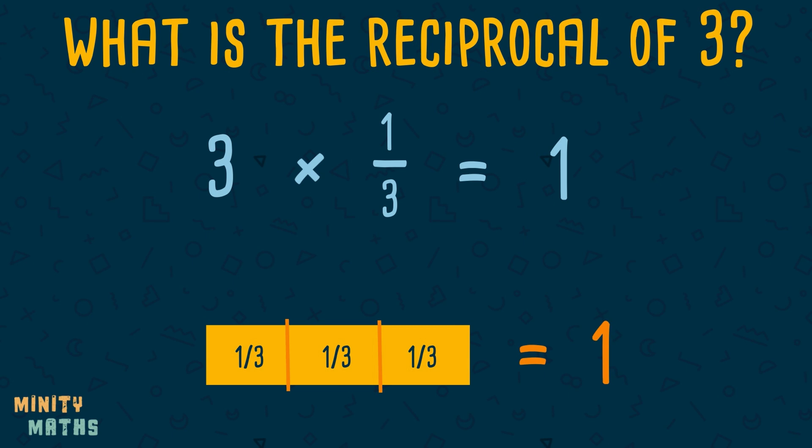We can see that 3 lots of thirds add up to make 1. So, 3 multiplied by 1 third is equal to 1, making the reciprocal of 3, 1 third.